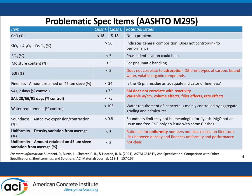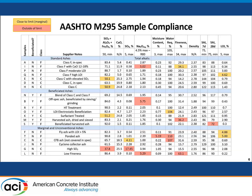Some of the other specification items: the sum of oxides gives us an indication that this is a fly ash and not just some random powder material, but is that truly linked to performance? SO3 — we saw an excellent presentation this morning — you can limit the percent, but it's really the phases that are present that affect performance. In general, we can do a better job of actually predicting how a fly ash will behave in concrete than we currently are.